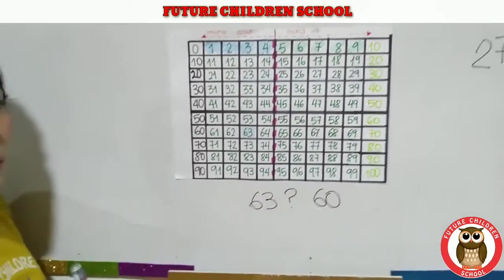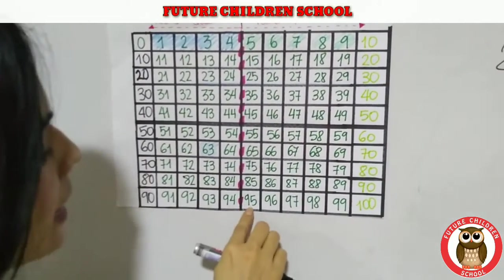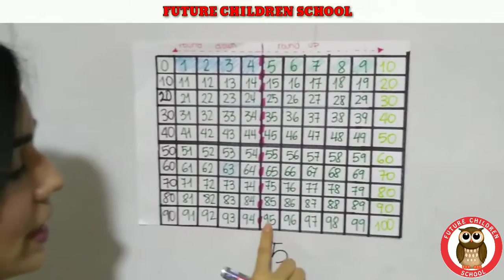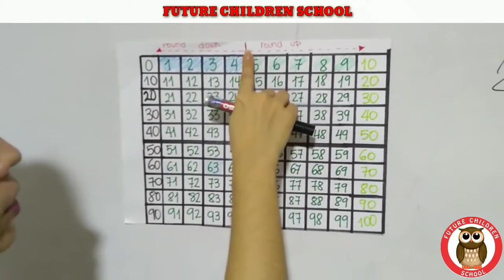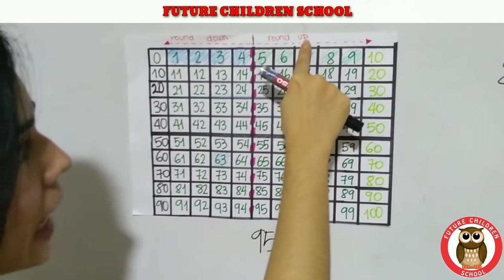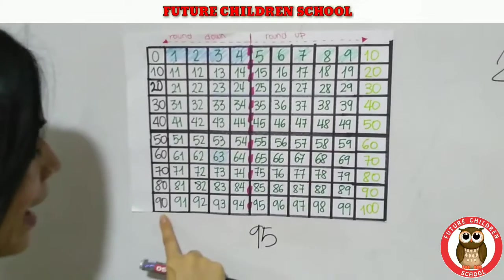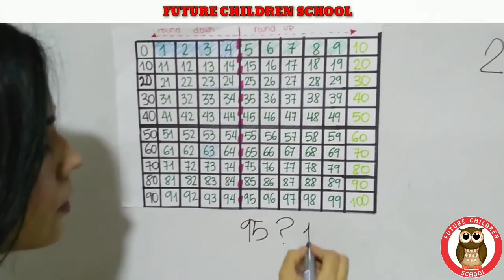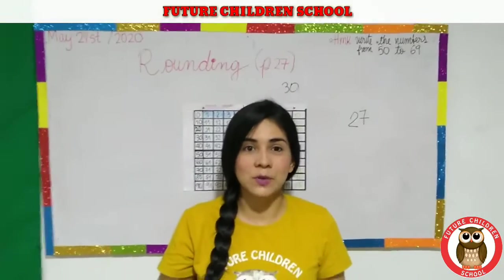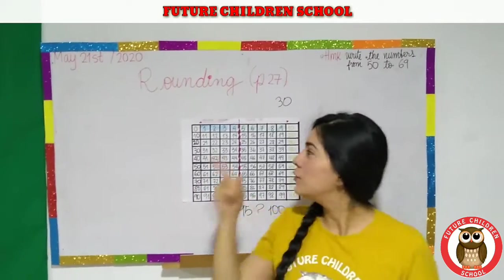Let's do one more example — the last one. We are going to choose 95. This number is in the middle, right? But pay attention — what is the rule? The ones digit is 5, and since 5 means you round up. So the nearest ten to 95 is 100, not 90. Very good. Guys, I know you have to practice at home, so I hope you can make a 100 square — it's easy and it will help you.